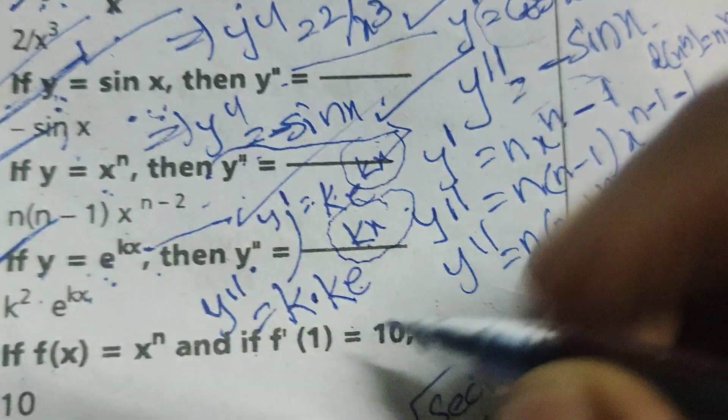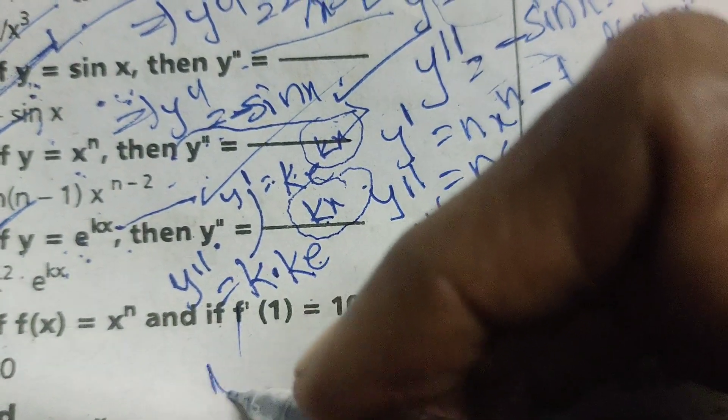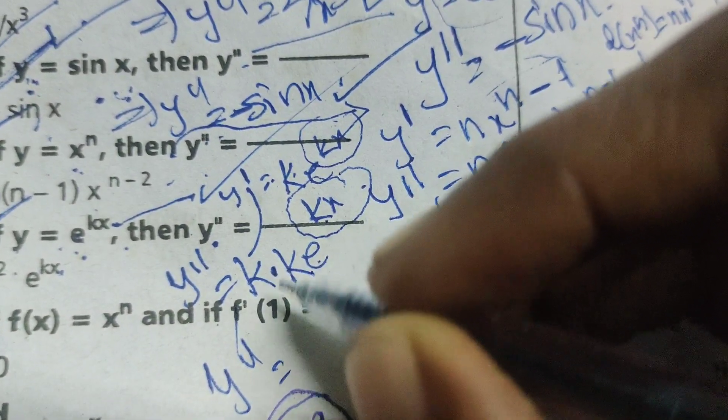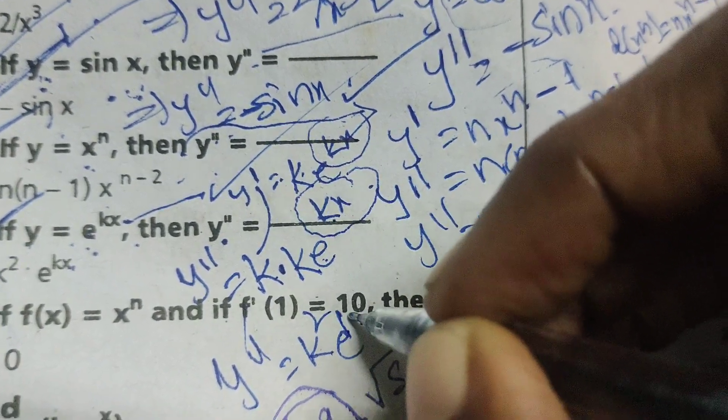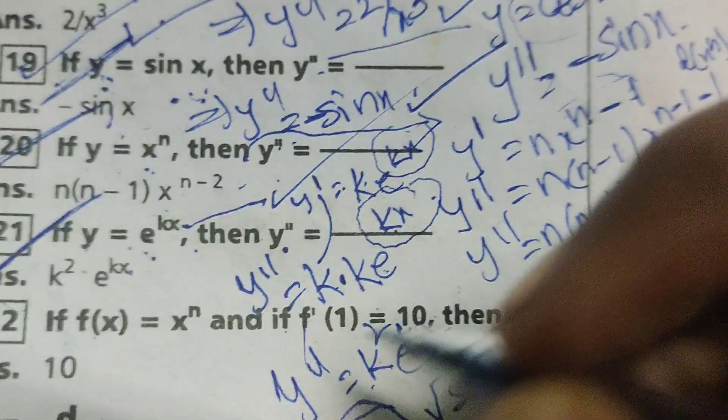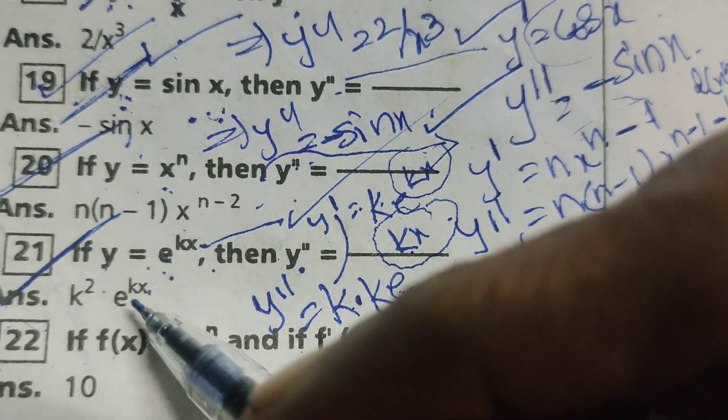Here, that is, y double dash equals k times k, which is k squared. k squared e power kx is the solution.